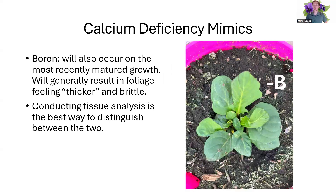Looking at mimics — what things can we confuse calcium deficiency for? The most common mimic is boron, which is also in that new mature growth. However, the big distinction is that the leaf is going to feel slightly thicker. You'll see leaf edge burn and stippling, but feeling that foliage, it's going to be thicker and brittle. Conducting tissue analysis to distinguish between the two is where we utilize foliar tissue analysis.